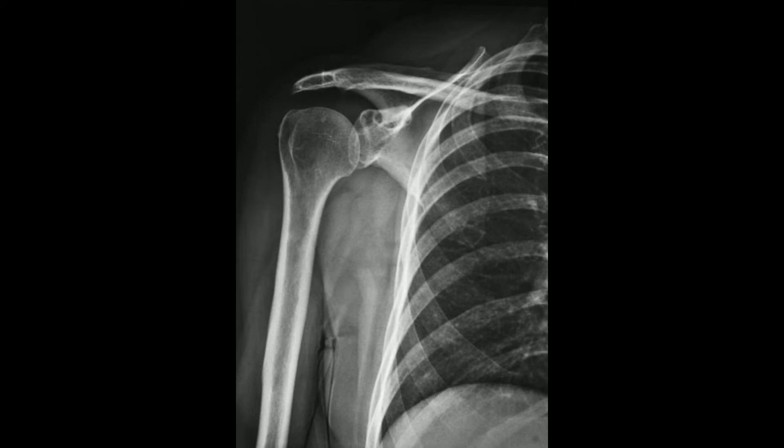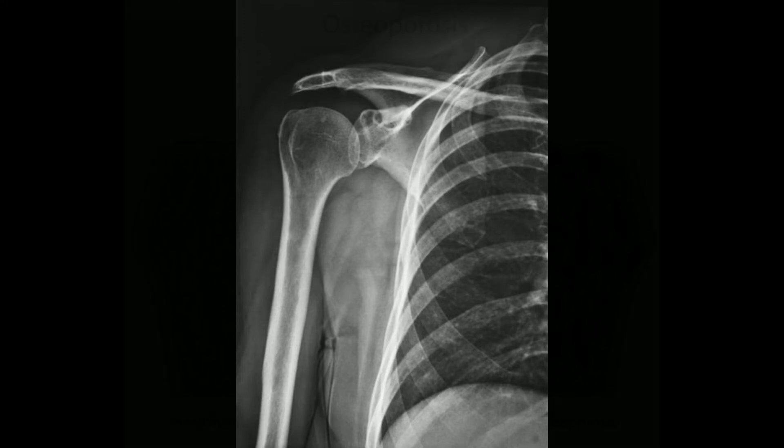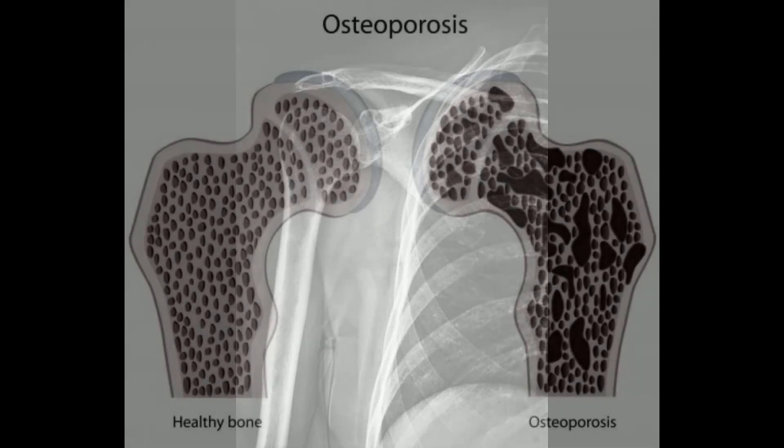Osteoclasts break down bone in response to inflammation, disease, and injury, removing damaged bone to allow it to be replaced with new bone.